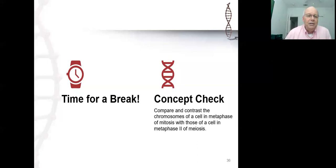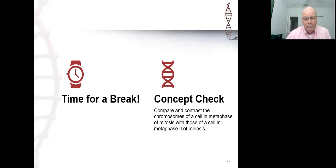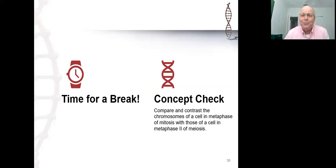Welcome back. Let's take a look at the concept check and then talk about the consequences of meiosis, specifically focusing on the sources of genetic variation, which we understand to be the reason for sexual reproduction in the first place — to create genetic variation. So we really want to look at where that genetic variation comes from, but let's take a look at the concept check question first.